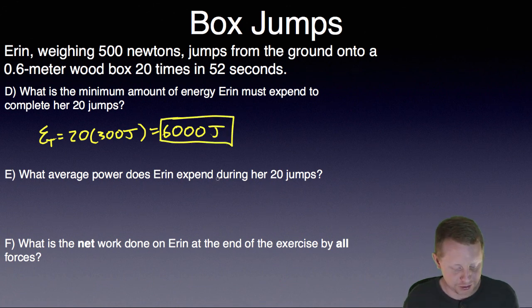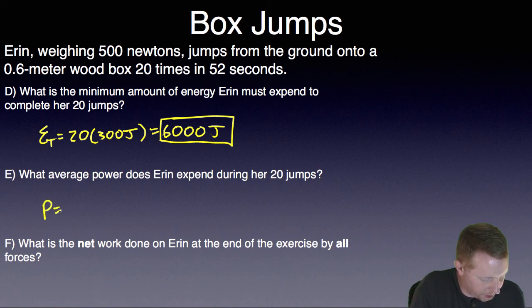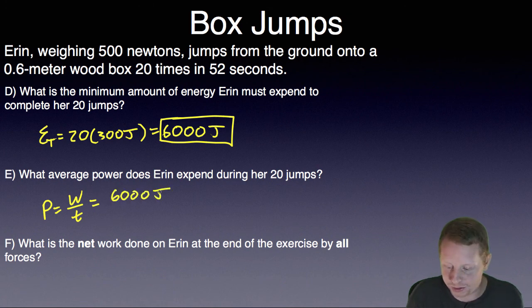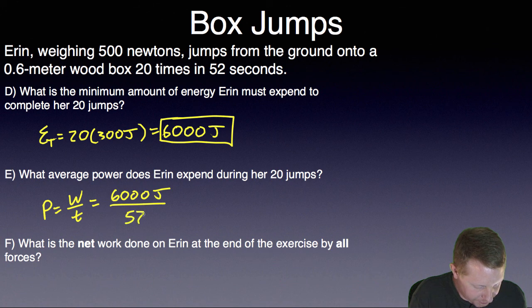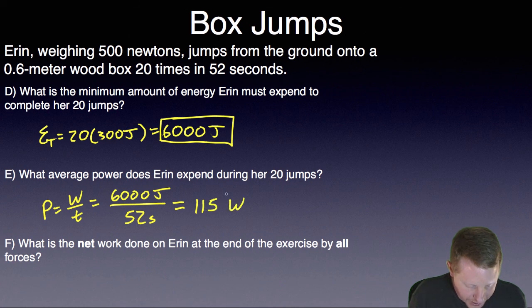And what average power does Aaron expend during her 20 jumps? Well, power is the rate at which work is done. So that's the total work divided by the time, which was 6,000 joules that she must expend, and she did that in 52 seconds. So the rate at which she is expending energy is 115 joules per second, or 115 watts.